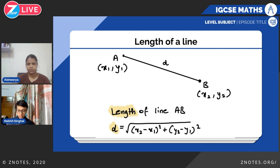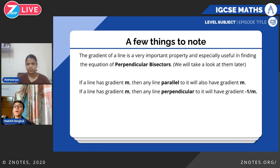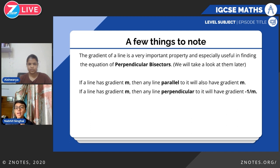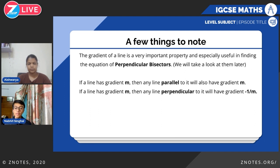The gradient of a line is an important property, useful for finding perpendicular bisectors. Two key properties: any line parallel to a line with gradient m will also have gradient m — parallel lines share the same gradient. If a line has gradient m and a second line is perpendicular to it, then the gradient of the perpendicular line is minus 1 over m — it is the negative reciprocal of the original gradient.